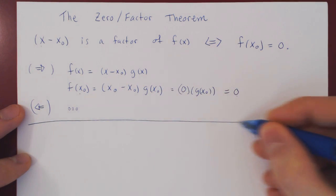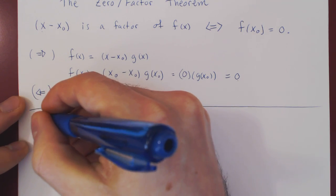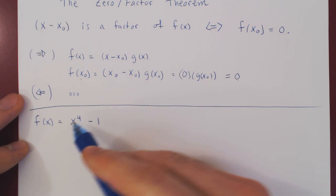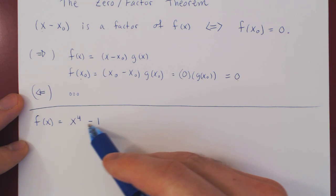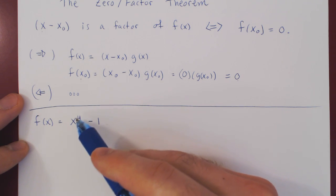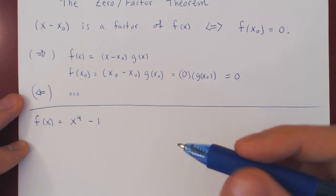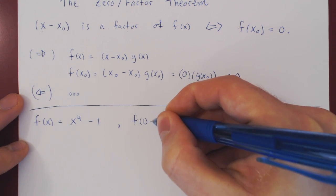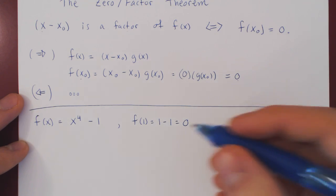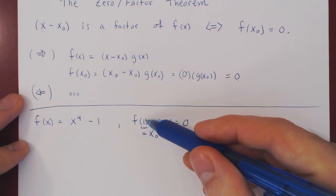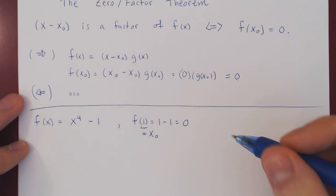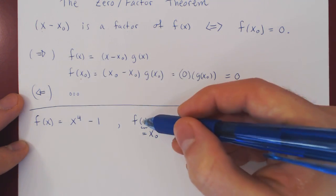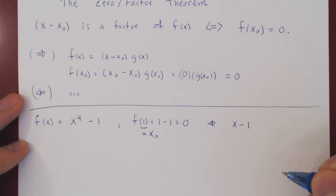Let's look at a few examples. Take the polynomial f of x equals x to the 4 minus 1. Can you see, just by inspection, a value of x that will make this zero? Well, if we replace x by 1, we get 1 to the 4, which is 1, minus 1, which is zero. So f of 1 equals zero, meaning x₀ is 1, and our free factor is x minus 1.